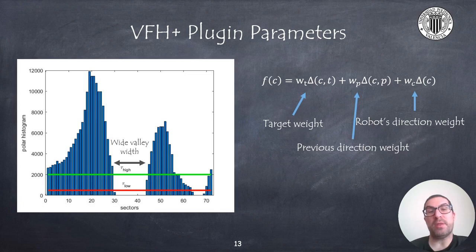Additionally, the algorithm uses three parameters that will have influence on the number of candidate directions that you obtain in the mass histogram. So, on the one hand, we have the binarization thresholds that we use to determine what sectors of the primary histogram are considered to be free or occupied. And on the other hand, we have the minimum number of sectors that are required, so we consider a valley to be a wide valley.